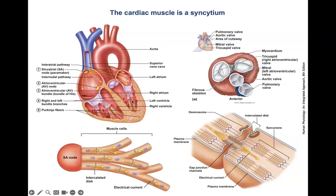We have two syncytia of the heart: the atria and the ventricles. The atria need some time to be excited and also some time for full contraction. Only then should the signal be passed down to the ventricles. So there should be electrical insulation between the atria and the ventricles — the atria should not be able to pass the signal down to the ventricles on their own.